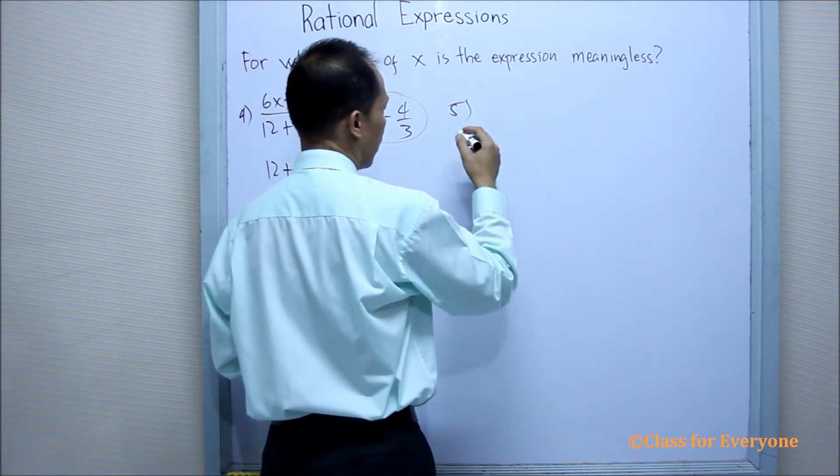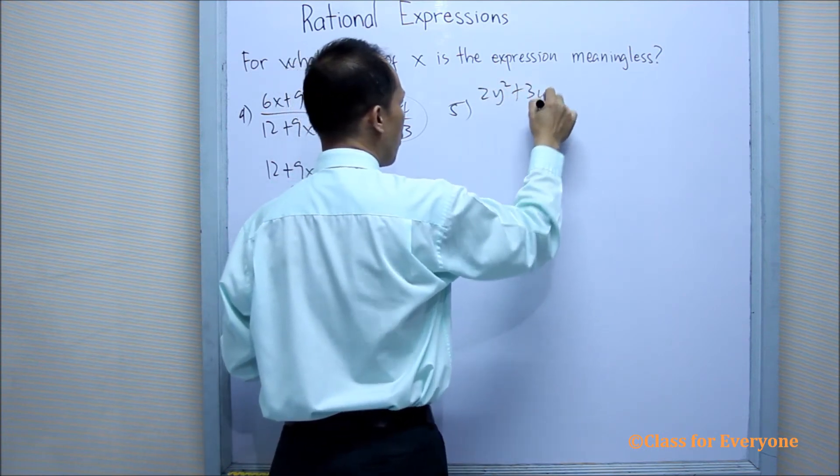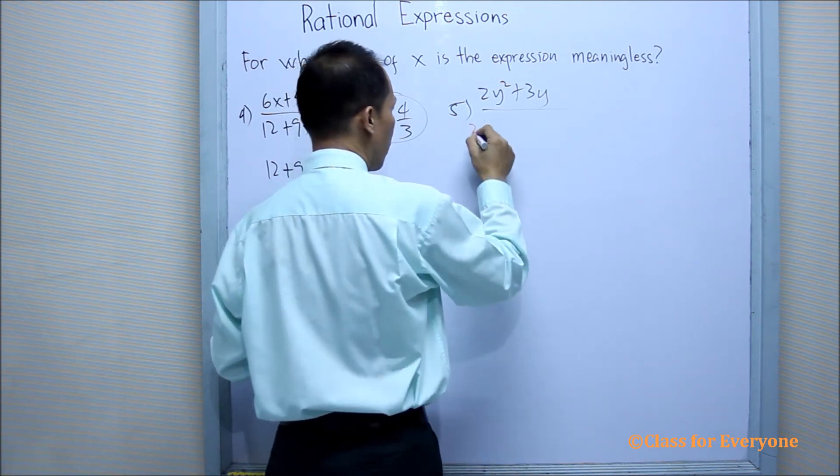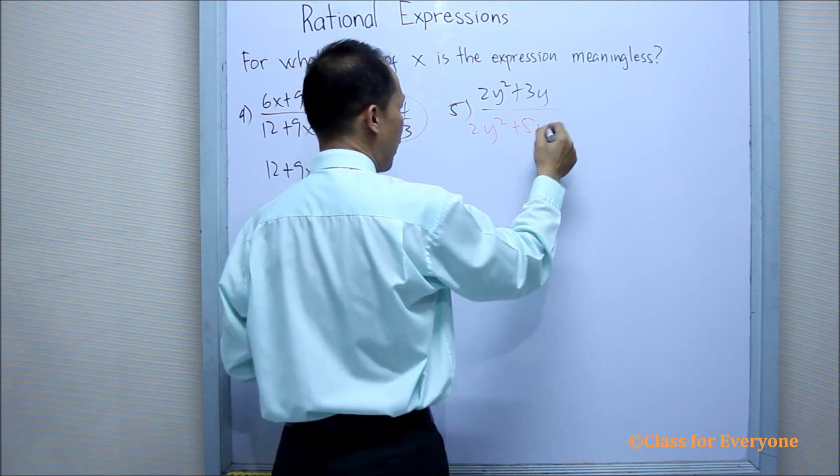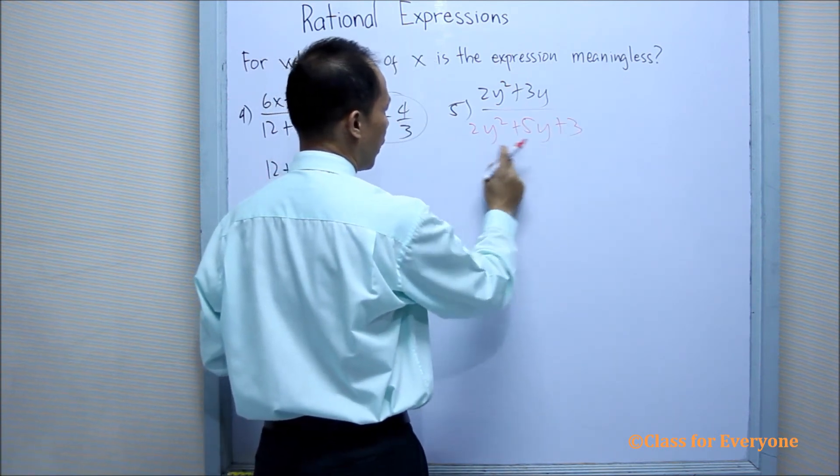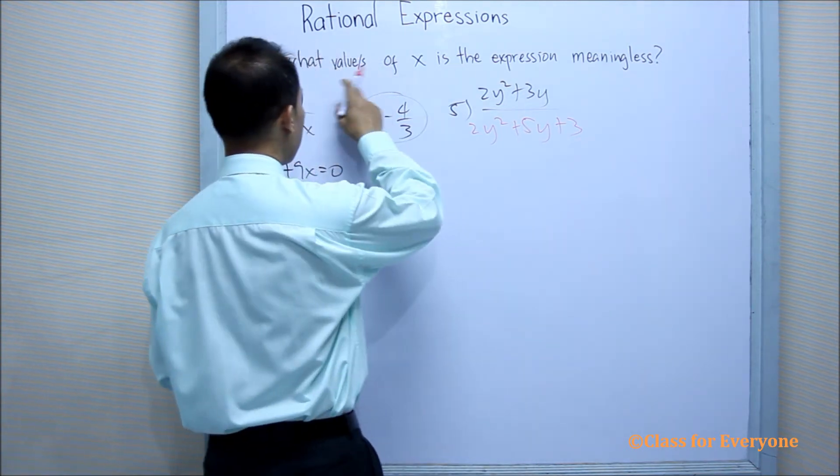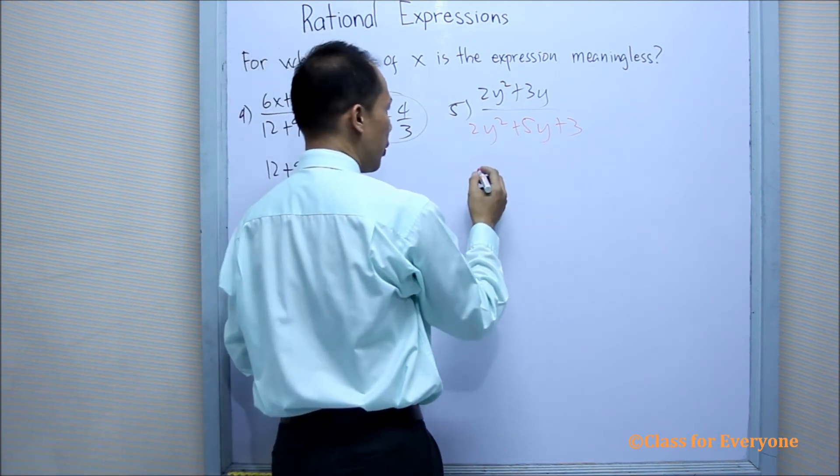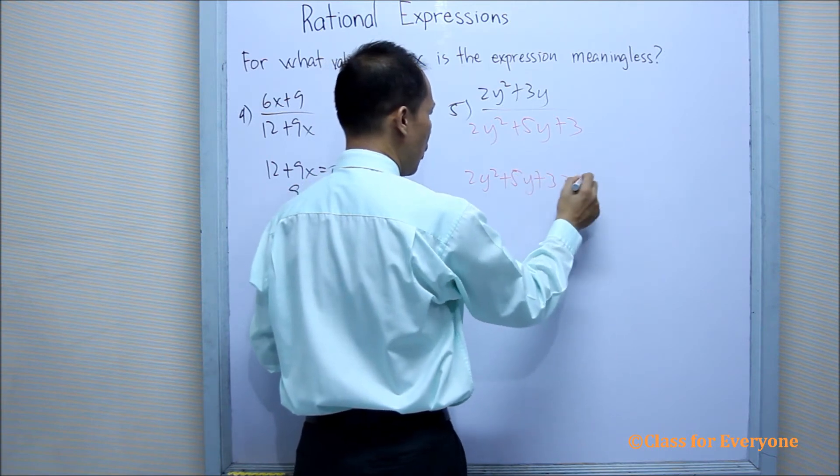So the denominator is 2y squared plus 5y plus 3. For this expression to be meaningless, the denominator is 0. So 2y squared plus 5y plus 3 equals 0.